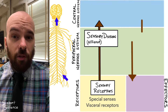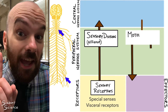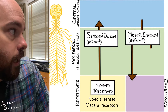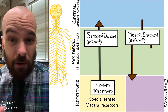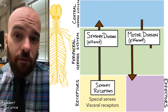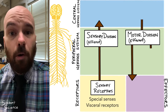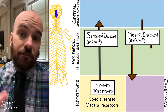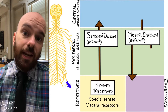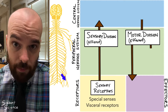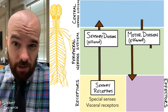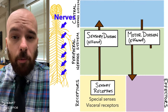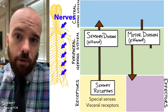The sensory division is also called the afferent division, not to be confused with the efferent division. Because those two terms are really easy to get confused, I refer to these two divisions as the sensory division and the motor division. The sensory division brings information to the brain and spinal cord, and the motor division takes information from the brain or spinal cord and sends it out to effectors throughout the body. Since both the sensory division and the motor division exist in the nerves that run between our brain and spinal cord and the rest of our body, they're both considered part of the peripheral nervous system.